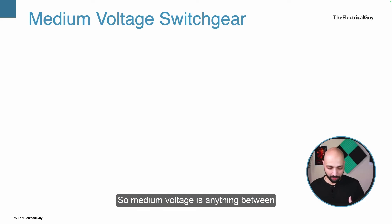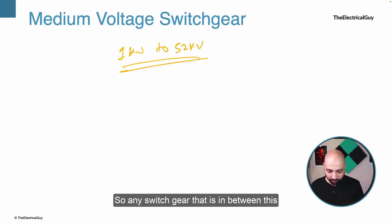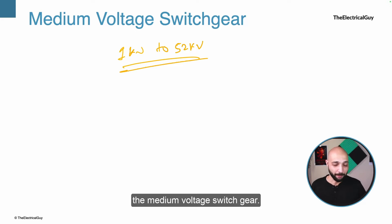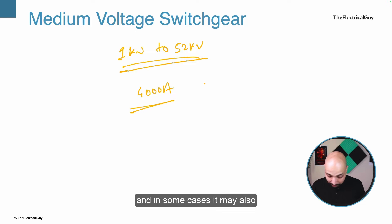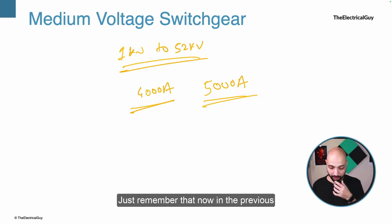Medium voltage is anything between 1 kV and 52 kV. Any switchgear in that range is considered medium voltage switchgear. The current rating can go up to 4000 A and in some cases may also go to 5000 A.